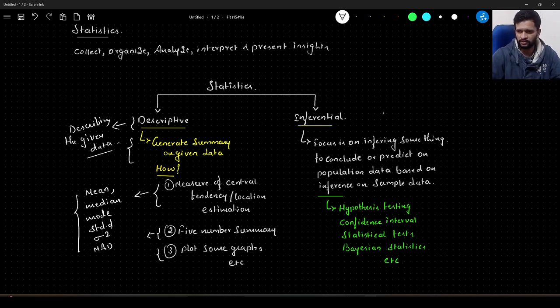That is what inferential statistics is. We infer something on the given data and conclude something on the entire population data. Just think of it this way: generally, whenever elections are conducted, we get exit polls. India is a country with 144 crore population, and we cannot go to each individual and do the survey. That's impossible for any surveying agency.